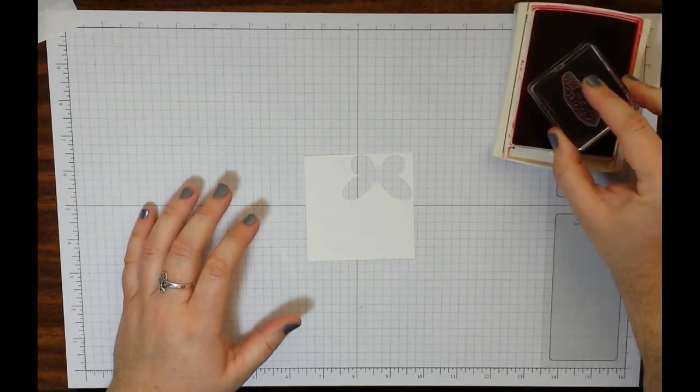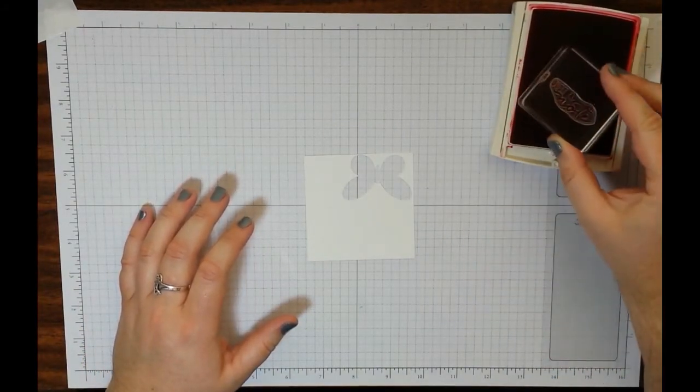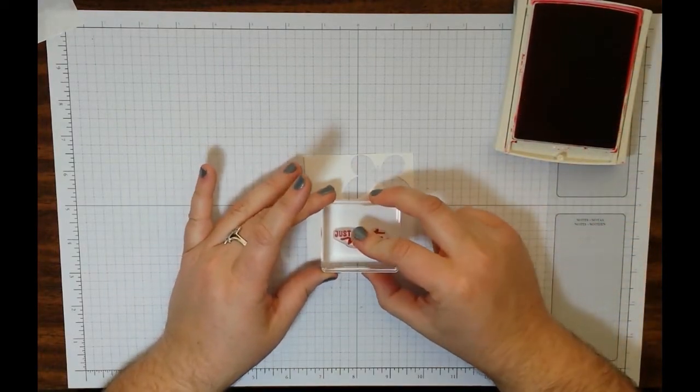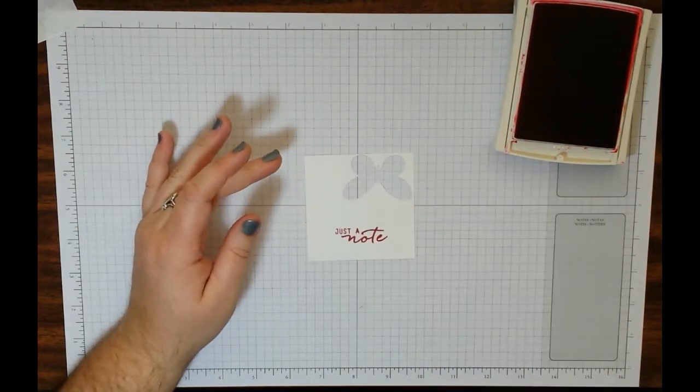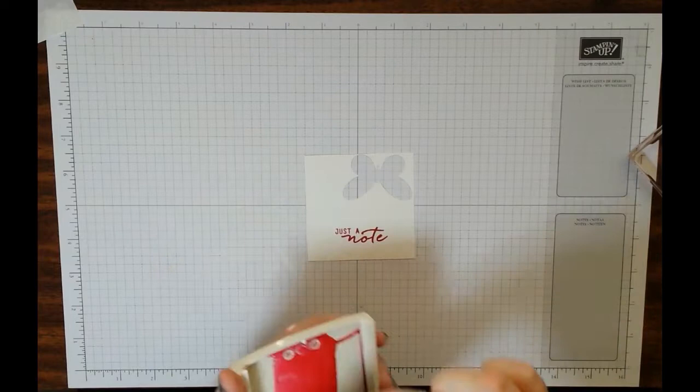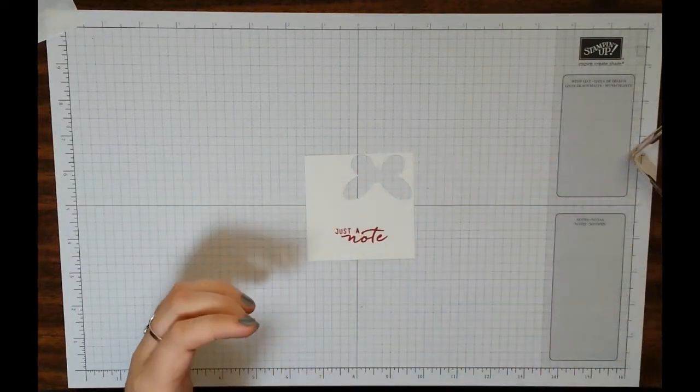So first and foremost, let's ink up our stamp. I got a really inky Real Red ink pad. Straight down, straight up. Beautiful. Mine's very juicy as it turns out. Go ahead and close that up and set that off to the side.